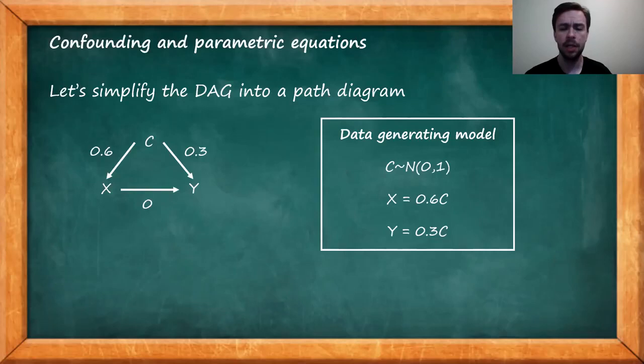X is 0.6 times C. In other words, a one unit increase in C causes an increase of 0.6 units in X. And similarly, Y is also caused by C, with a unit increase in C causing a 0.3 unit increase in Y. And we are also assuming that X and Y are not causally related. In other words, the causal effect of X on Y is 0.